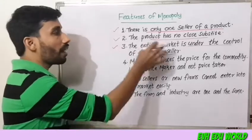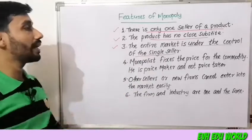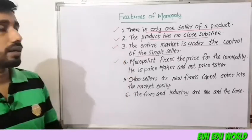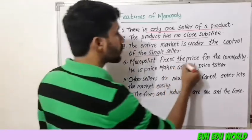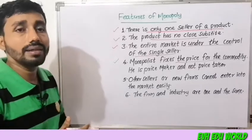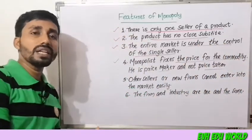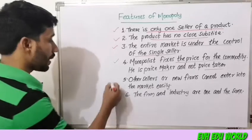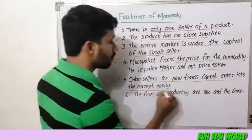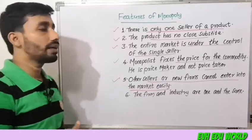Third, the entire market is under the control of a single seller. Fourth, the monopolist fixes the price for the commodity — he is a price maker and not a price taker. Fifth, other sellers or new firms cannot enter into the market easily.